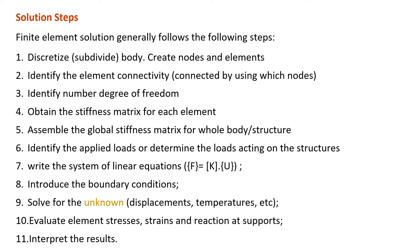Here is the solution step — how to solve the problem using FEM methods. The first step is to discretize or subdivide the body by creating the nodes and elements. Once we have the nodes and elements, we have to identify the element connectivity — for example, which nodes each element is connected to. Number 3 is to identify the number of degrees of freedom, meaning the number of unknowns in our problem that we want to solve.